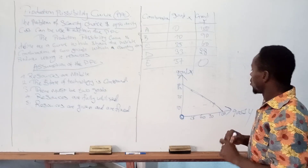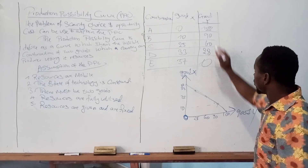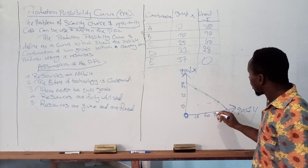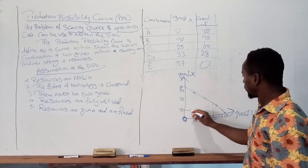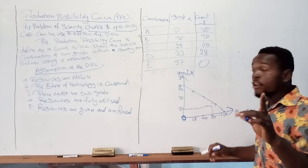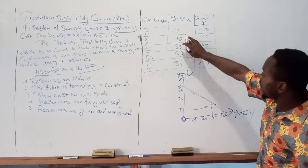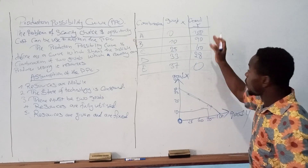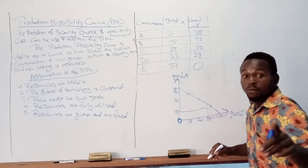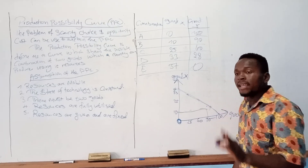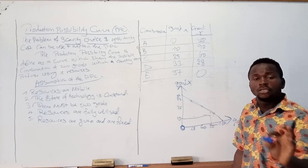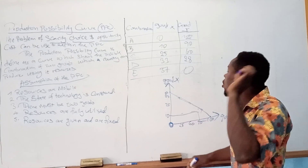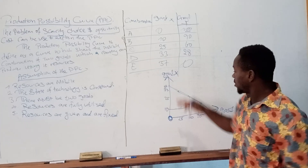The opportunity cost of producing 10 units of good X is forgoing 10 units of good Y. This is straightforward because there is scarcity in this economy, and when there is scarcity, resources are not available to satisfy every need. So the country has to forgo something to gain something — the opportunity cost of the choice made.